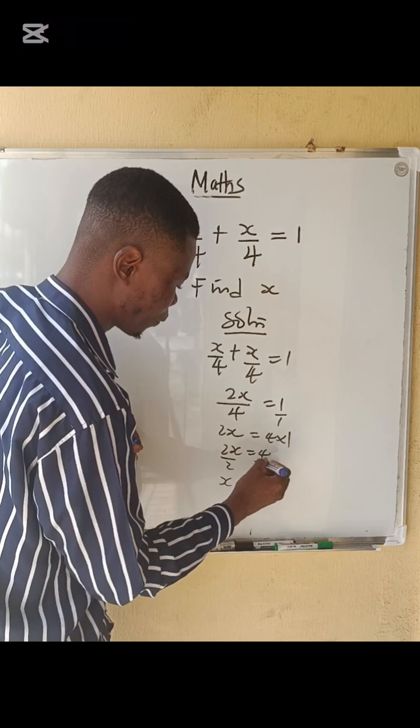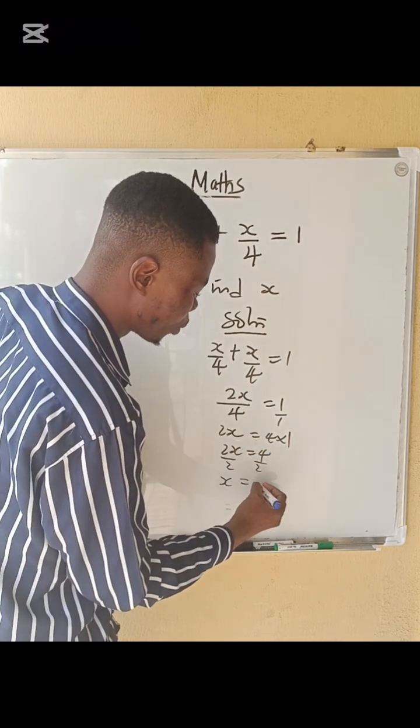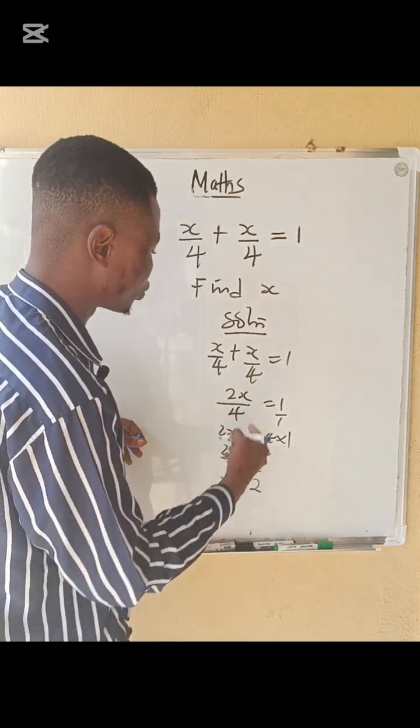So x equals to 4 divided by 2, that will give you 2. So the value of x is 2.